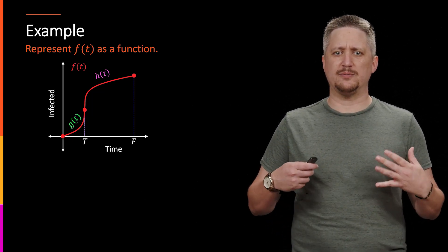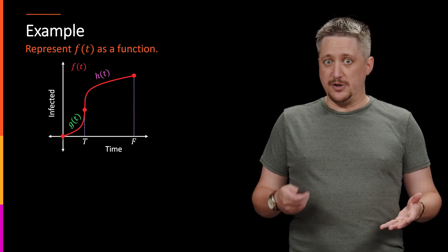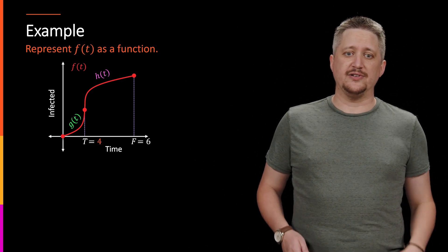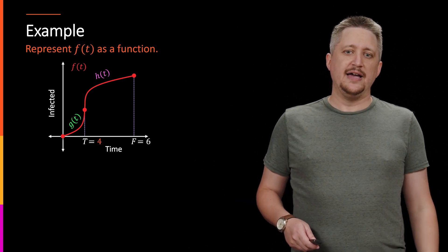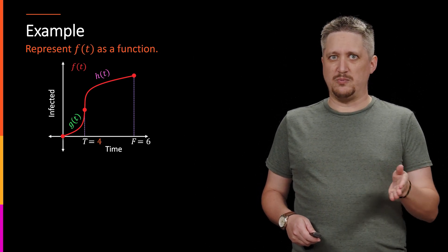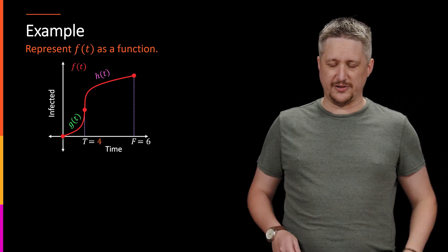And the idea is how do we actually represent this now analytically? So to do this, let's throw some numbers and some actual things on here. So let's say T happens at some time four, like four months or something, and F just being sort of when we stop modeling, that's say at time six. So six months or something like this.